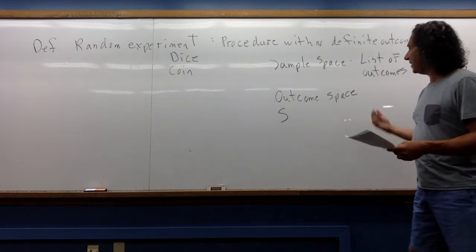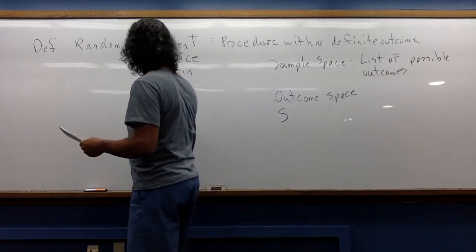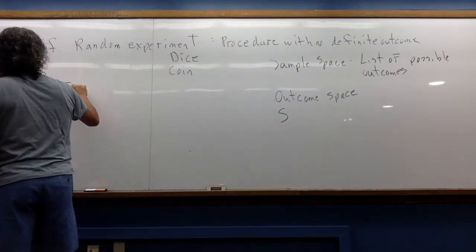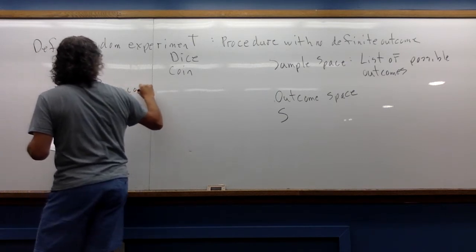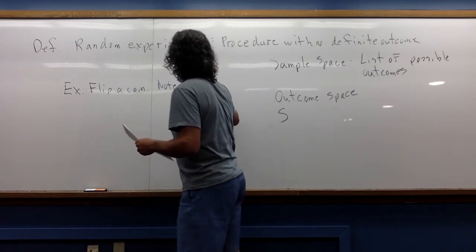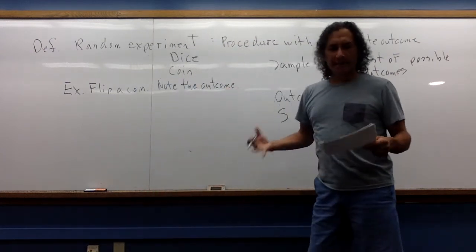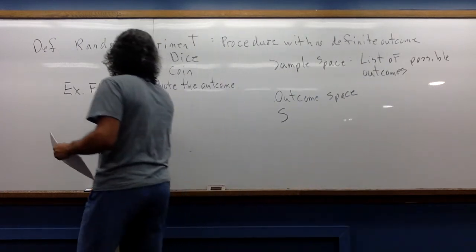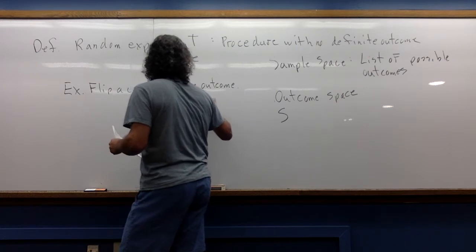So as an example, with this coin that we were talking about, if I flip a coin, here's my random experiment, and I note the outcome. So the sample space here is just the set heads, tails.